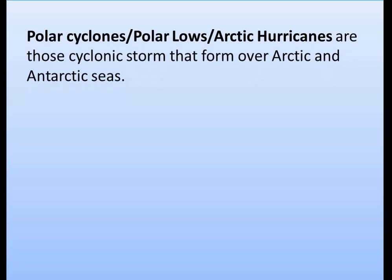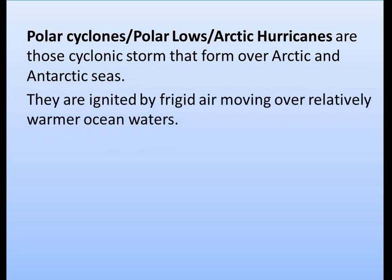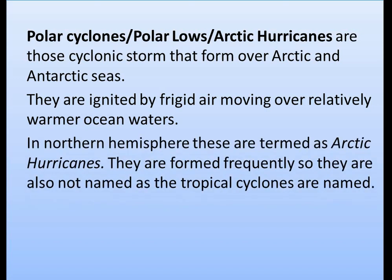Polar cyclones are also called polar lows or arctic hurricanes. These are cyclonic storms that form over arctic and antarctic seas. They are ignited by freezing air moving over relatively warmer ocean waters. In the northern hemisphere, these are termed arctic hurricanes. Like temperate cyclones, polar cyclones are also not named the way tropical cyclones are named.